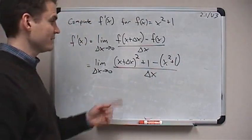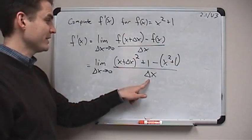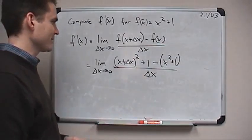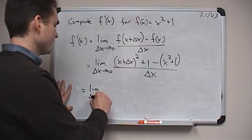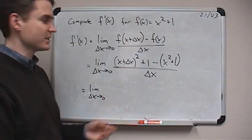And of course, we can't evaluate this limit yet, because delta x being 0 is a problem. We'd be dividing by 0. So instead, we expand everything in the numerator out and try to cancel terms. Hopefully, eventually, we can cancel that delta x.